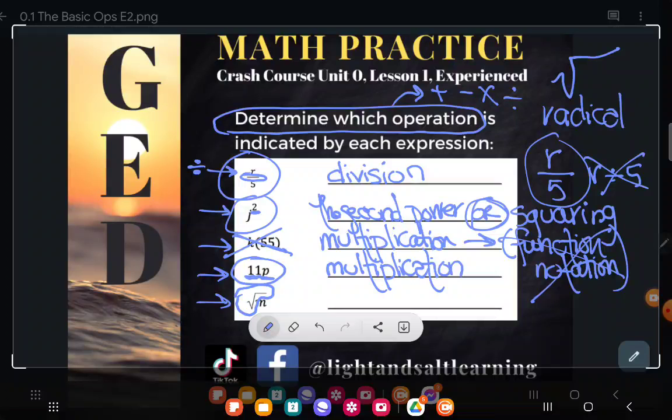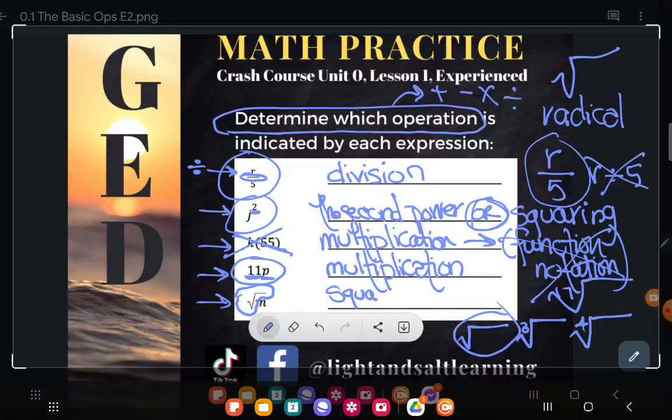But radicals are used for different operations. There's the square root when you just see a radical alone, but you can have numbers inside of the checkmarks and those are different roots—third root or cube root, fourth root, fifth root, I don't know, 17th root. There's lots of different roots. But for the GED, really knowing square root—the one where it's just a radical by itself—is just fine. So we're going to say that square root is the operation indicated here.